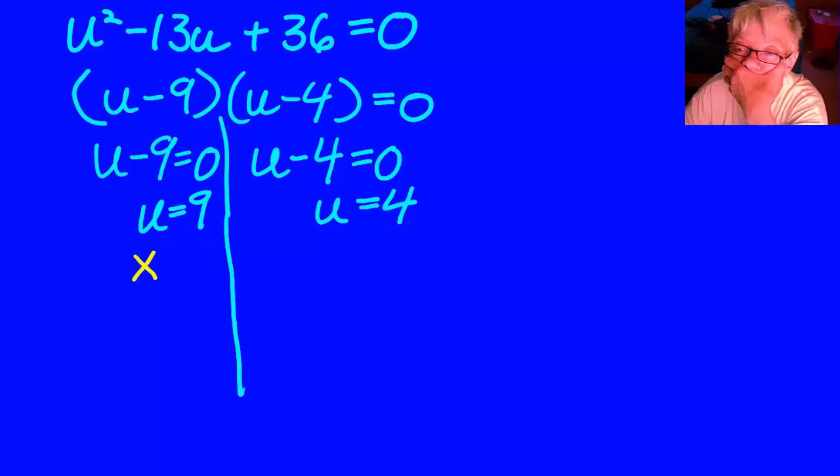Now I have to re-substitute the letter that was used in the original equation. After all, u equals x-squared, so I re-substitute x-squared in for the u. Then, to isolate x, I take the square root of both sides, and I take the plus or minus square root of the constant.